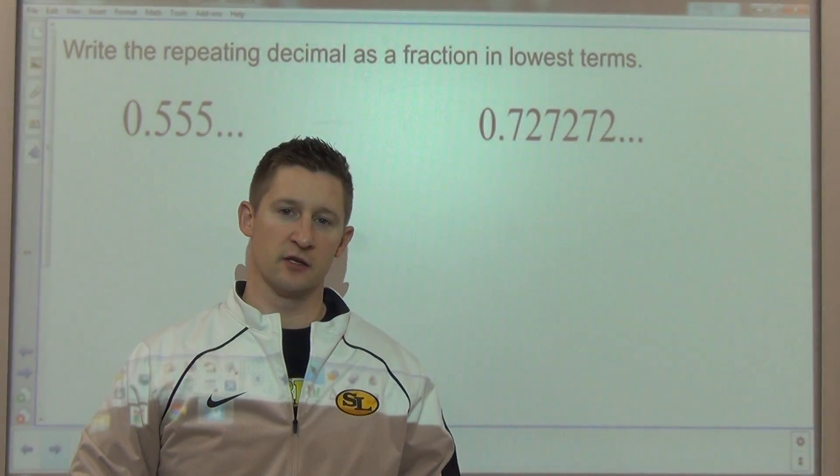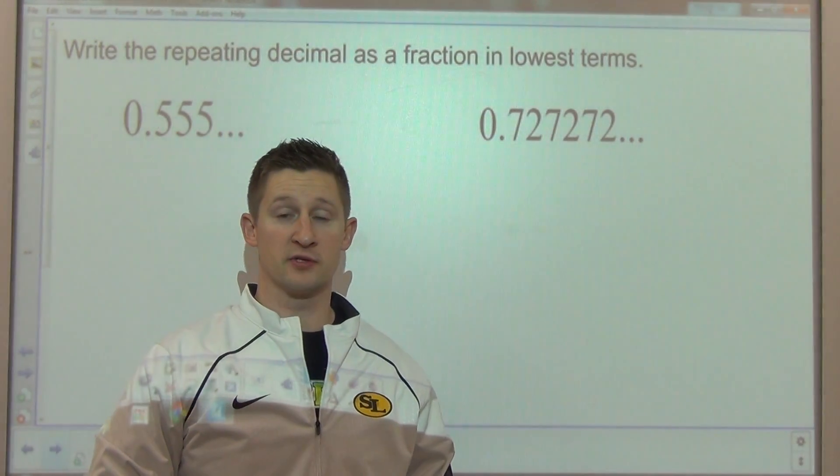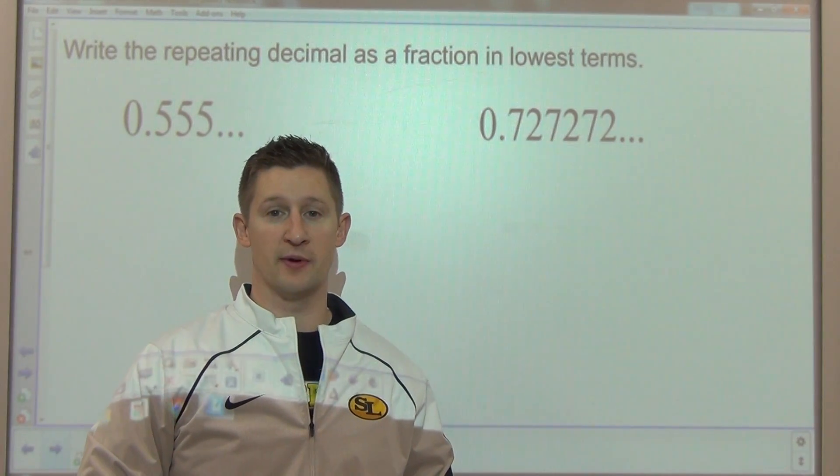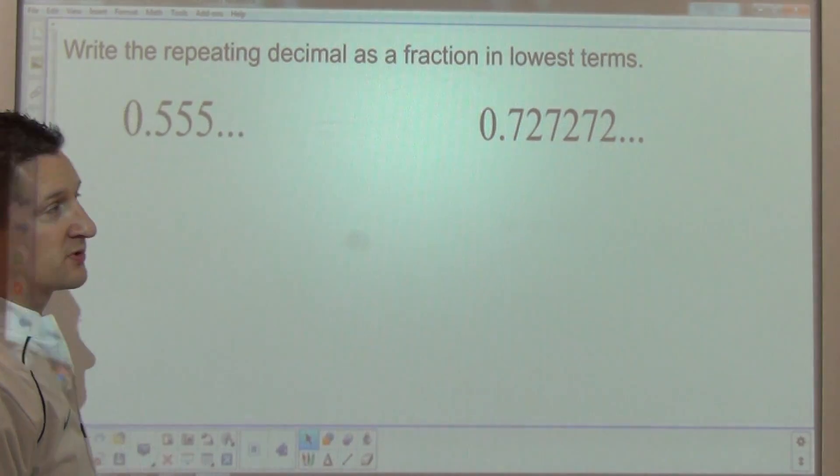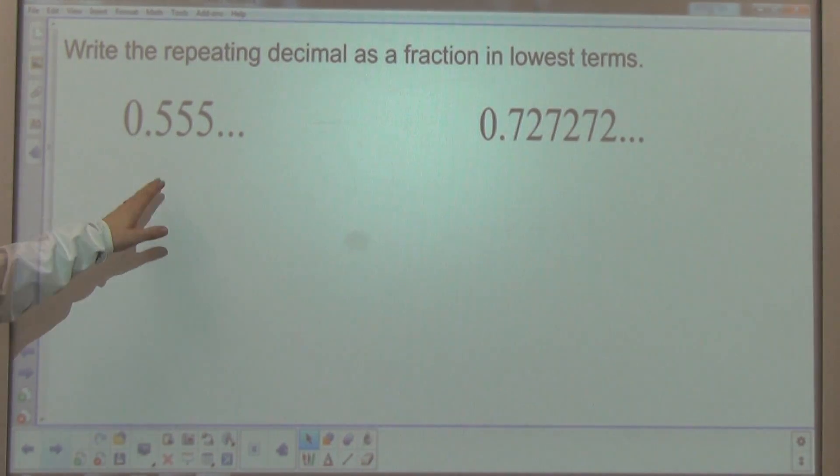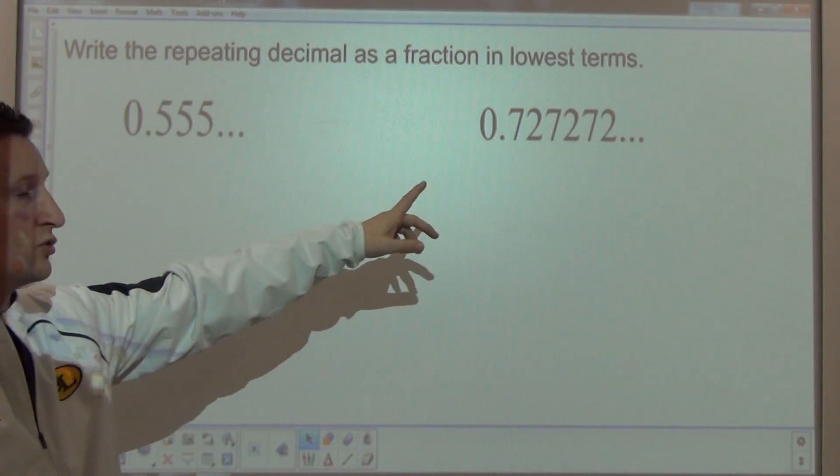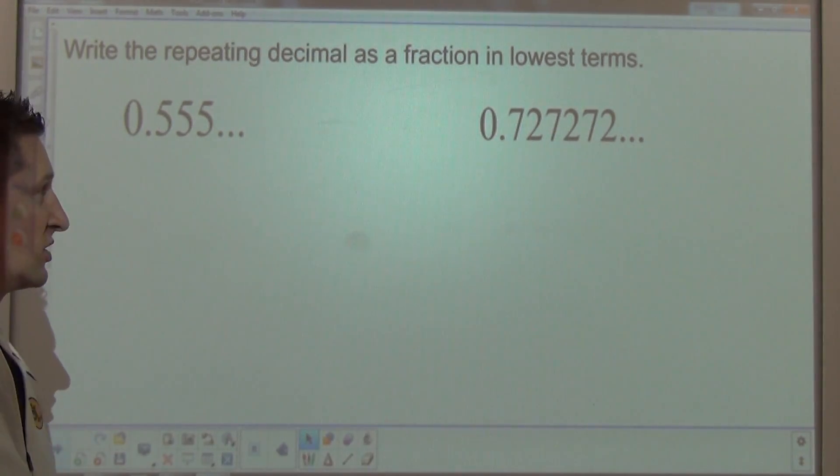Okay, what we're going to talk about next is a little extension of what we learned about finding the sums of an infinite geometric series. In these particular examples, we're asked to write the repeating decimal 0.5 repeating, 0.72 repeating, as a fraction in lowest terms.